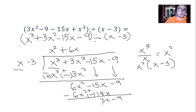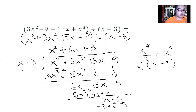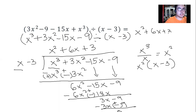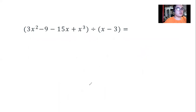The next first term is 3x, and 3x divided by x gives us plus 3. We multiply and get 3x minus 9, then change signs. The remainder is 0, so we stop here. The final quotient is x squared plus 6x plus 3.